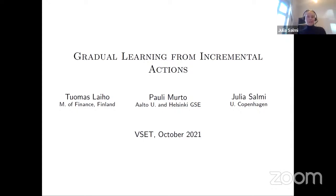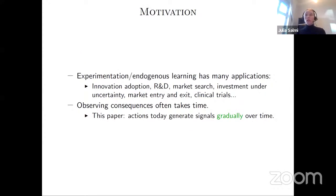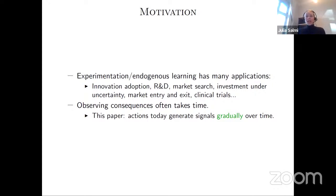The economic problem we have in mind is an experimentation or endogenous learning problem. Experimentation models have been widely used to study innovation adoption, R&D, market entry and exit, and so on. There is a large literature. But what we are adding is information lags. If you think about innovation adoption, when someone starts to use a new technology, we get observations gradually over time about how well the technology works.